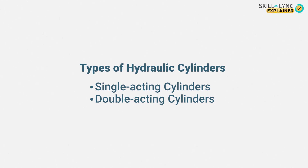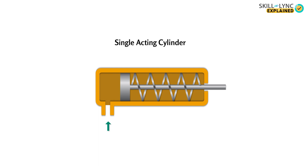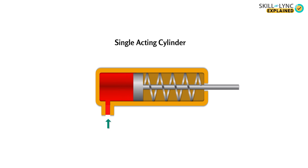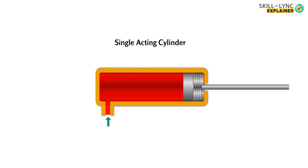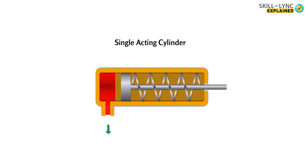Generally, there are two types of hydraulic cylinders based on their functions. The simplest type is called a single acting cylinder. Just as the name suggests, in a single acting cylinder the pressure from the hydraulic fluid can only actuate the cylinder in one direction — either in extension or retraction. To return to the normal position, such cylinders use a spring.